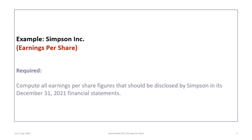And seventh, we'll show proper income statement disclosure of basic and diluted earnings per share. This tutorial is based on the Simpson Inc. example. The one basic requirement is to compute all earnings per share figures that should be disclosed by Simpson on its December 31st, 2021 financial statements — meaning we need to do everything identified in the learning objectives.